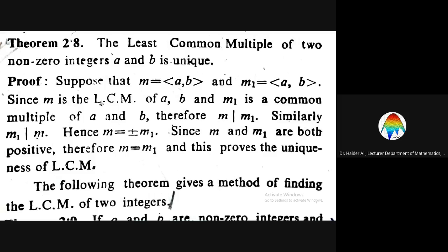Since m is the least common multiple of a and b, and m1 is a common multiple — because the least common multiple is a common multiple as well, just like a gold medalist in the class is still a student — m1 is a common multiple. We know that the least common multiple divides any common multiple, so m divides m1.